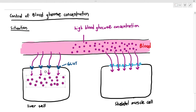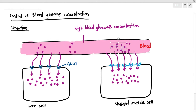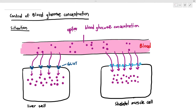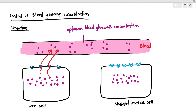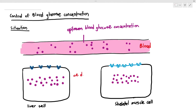As the glucose enters the cell, the blood glucose concentration returns back to optimum, because we don't want it too high or too low. Now the glucose is in the cells. Because there's glucose in the cells, the cells do not want the glucose to escape out, because glucose can easily move through the carrier proteins by diffusion. So the cell wants to try to retain the glucose in the cell as much as possible.